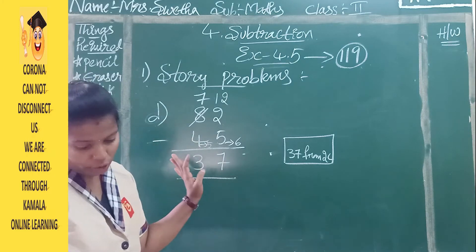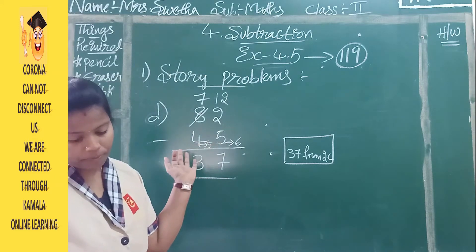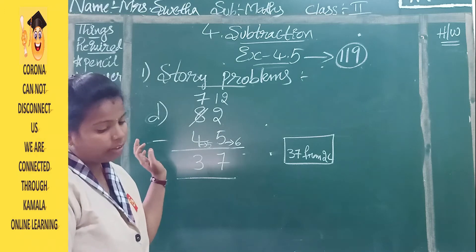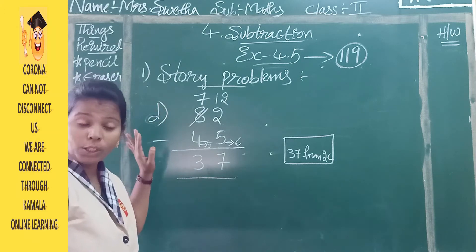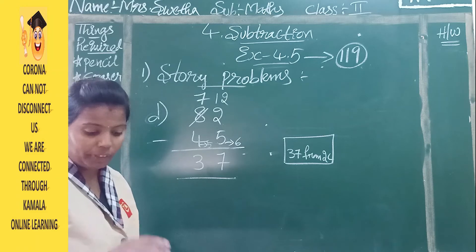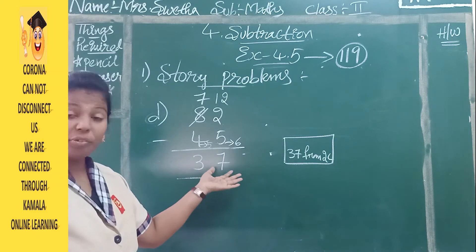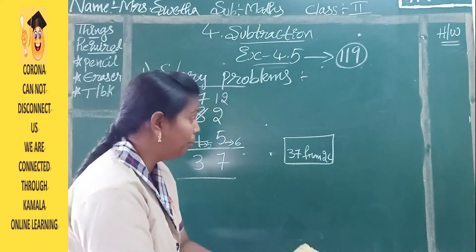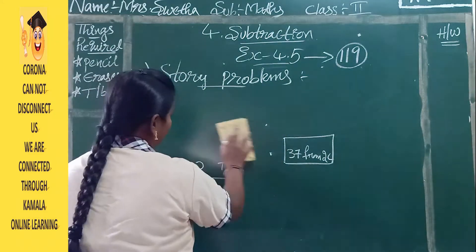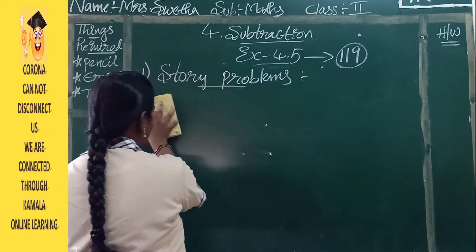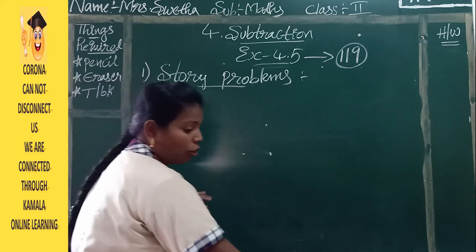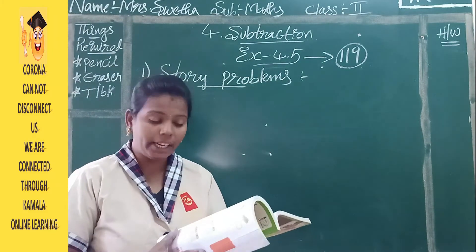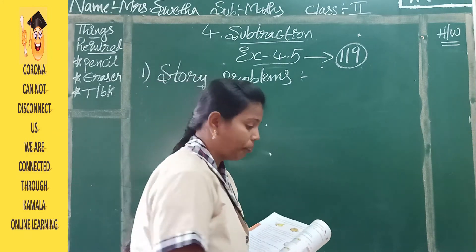This is about the first bit. Now you have a second bit — also story problems. But here you have to check and decide what operation to do: whether addition, subtraction, or both. You have to decide and then solve.